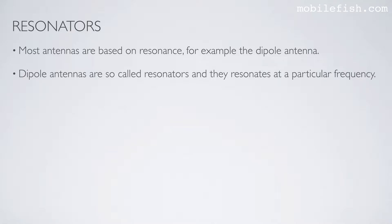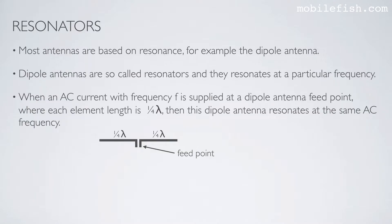Dipole antennas are so-called resonators, and they resonate at a particular frequency. When an alternating current with frequency f is supplied at the dipole antenna feedpoint, where each element length is a quarter-lambda, then this dipole antenna resonates at the same alternating current frequency.